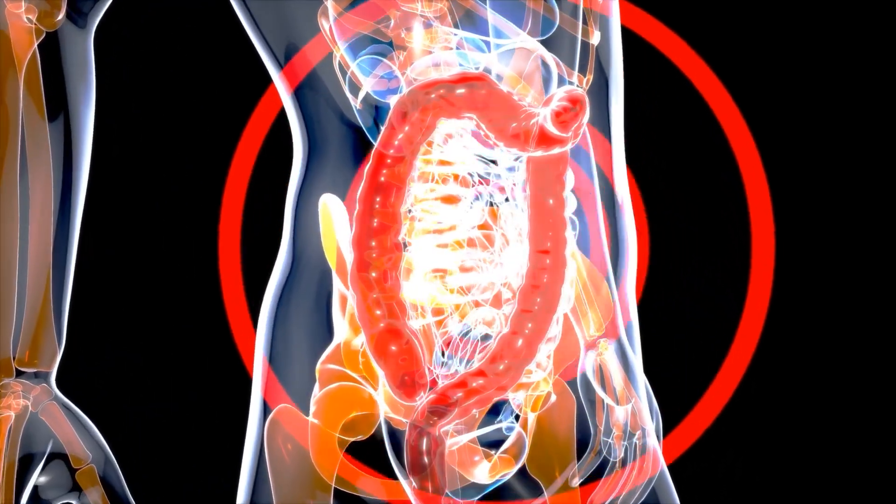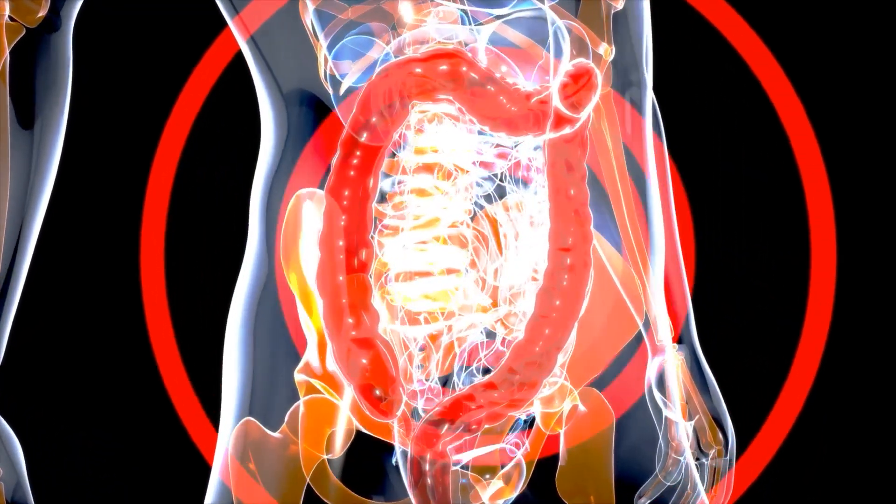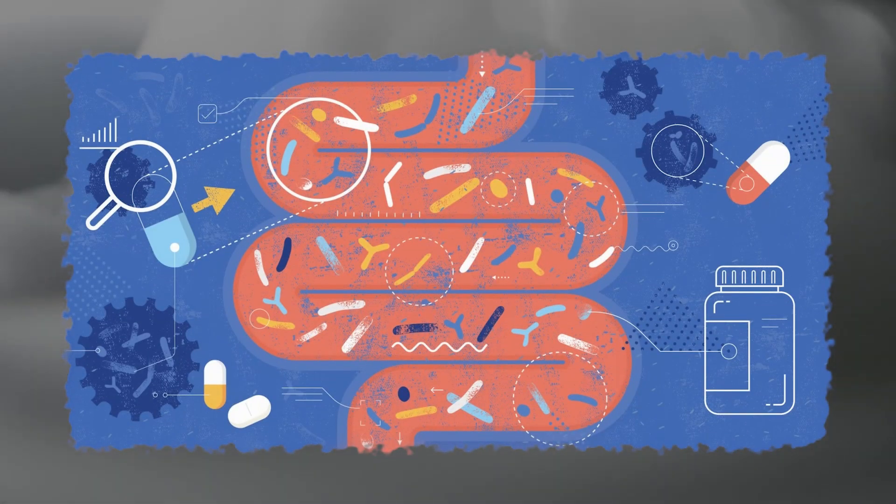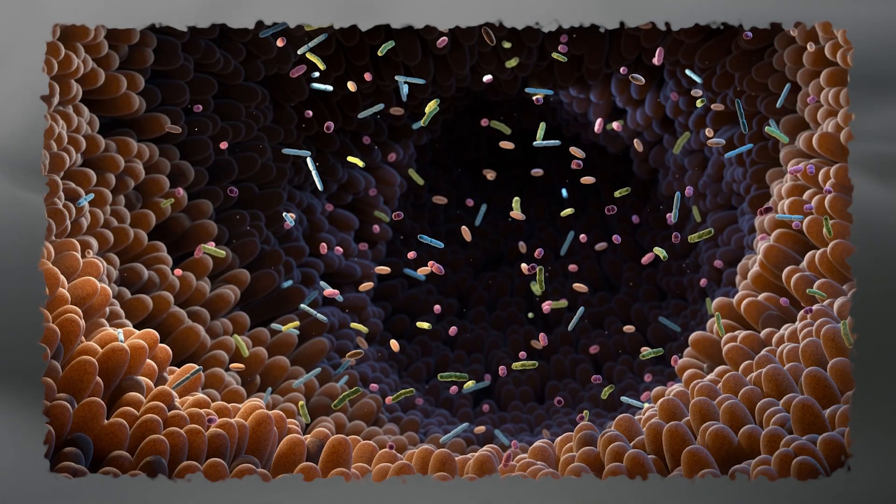Research suggests that certain strains of beneficial bacteria can produce neurotransmitters such as serotonin and dopamine, chemicals responsible for regulating mood, which may help alleviate symptoms of depression and anxiety.